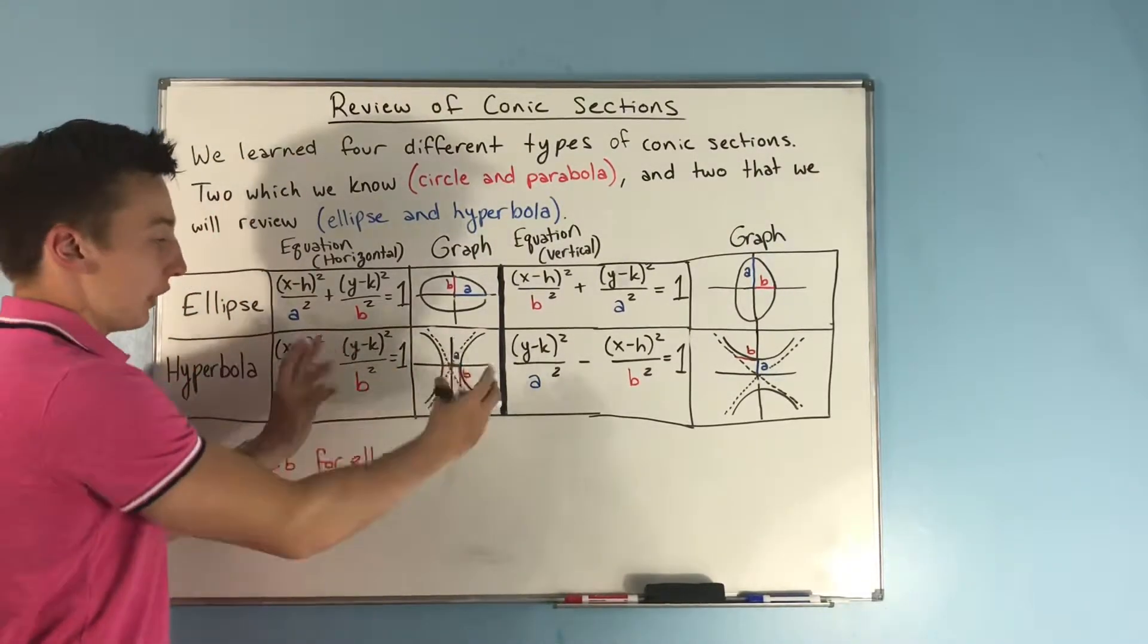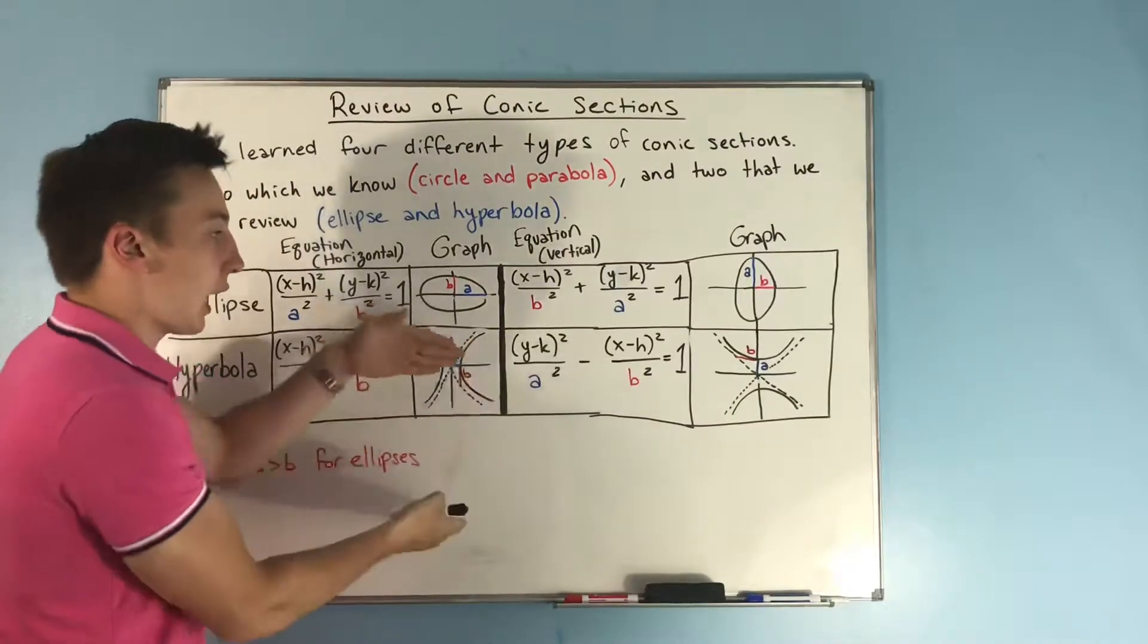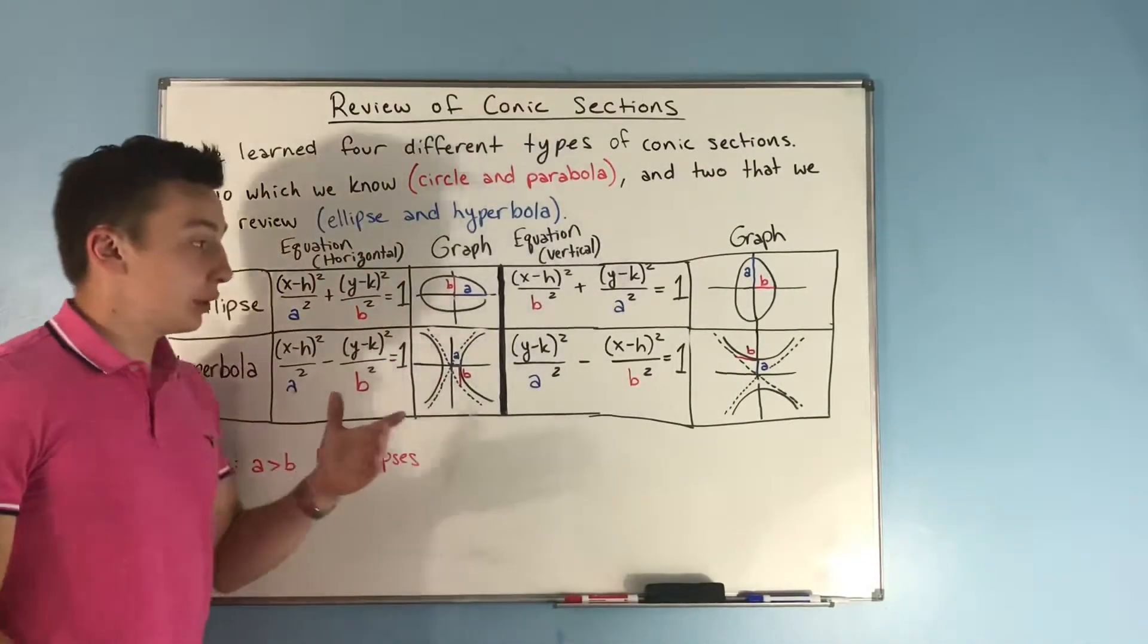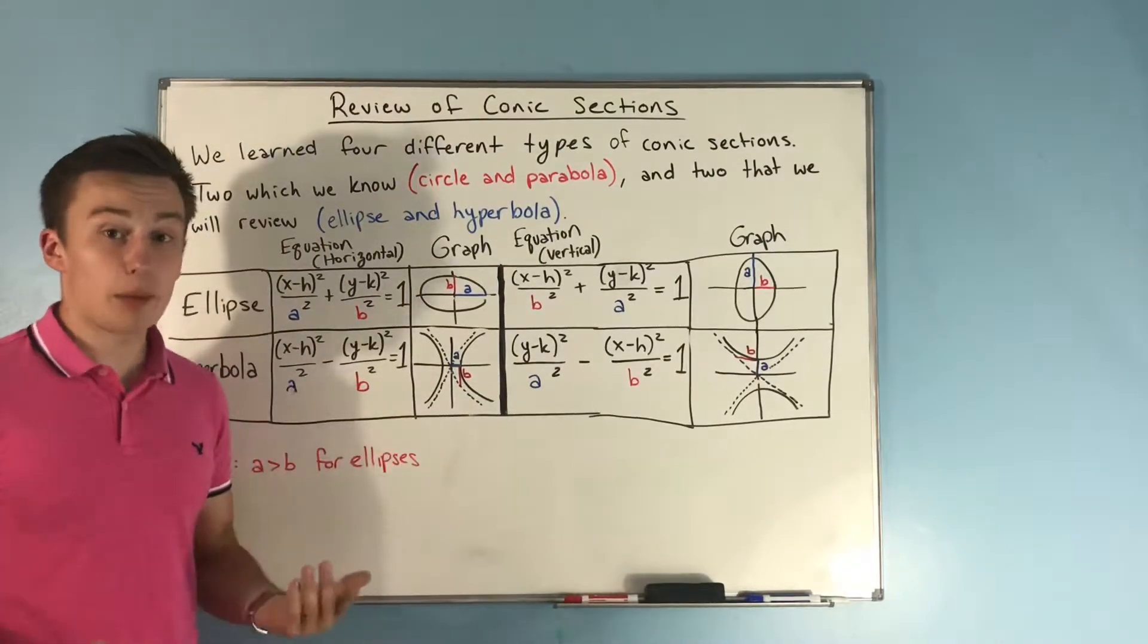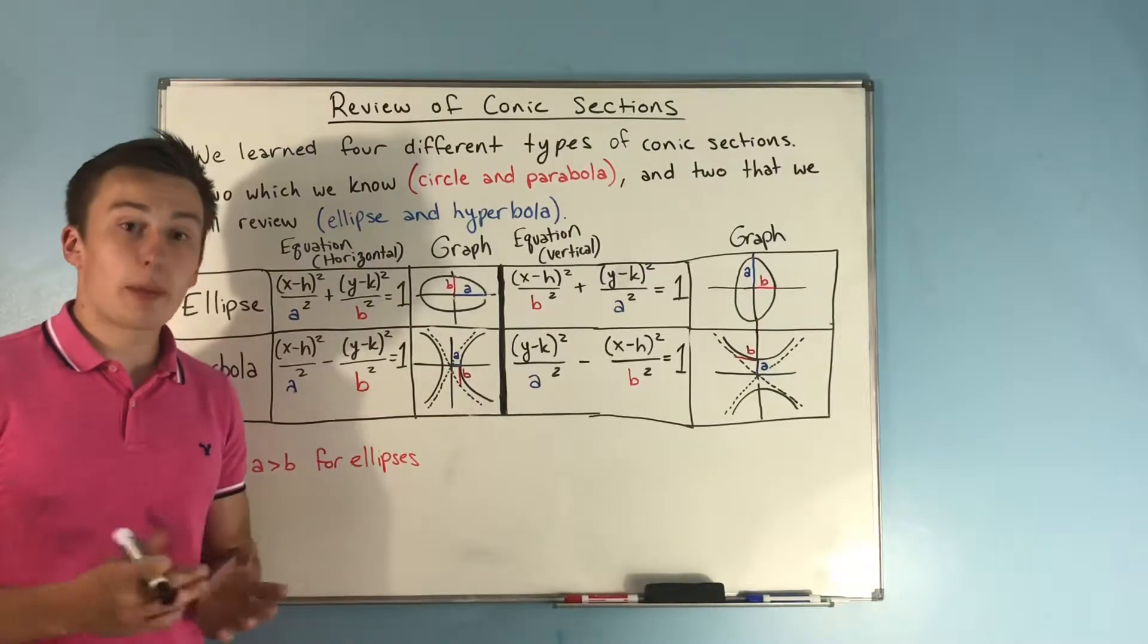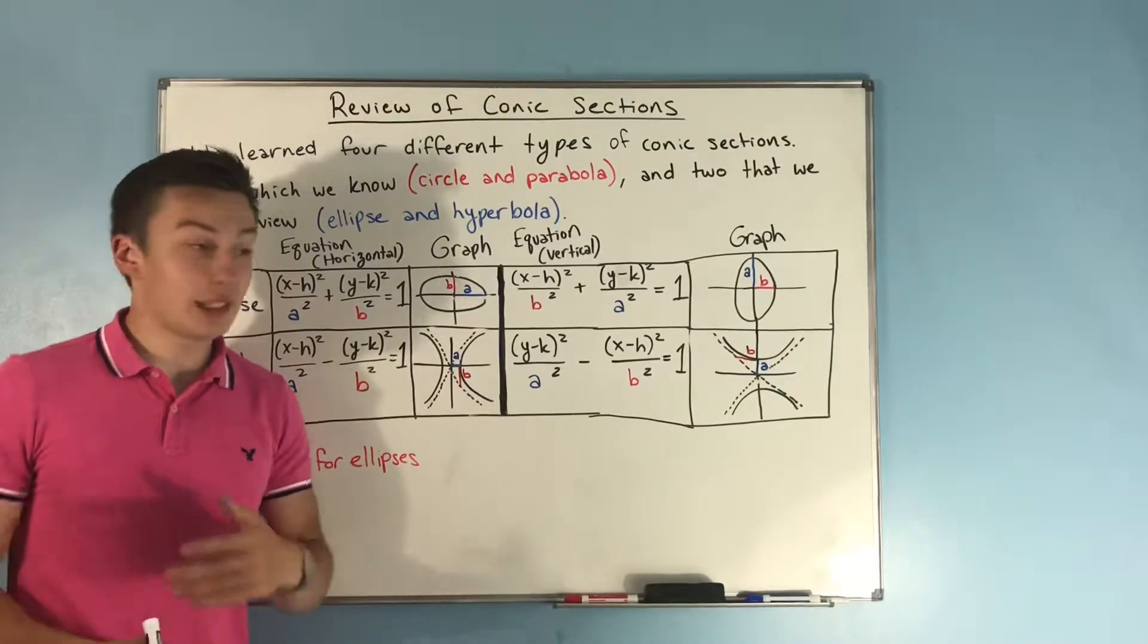And really, I mean, you can see here, this is just this graph turned 90 degrees, and then you get that. So we're just going to do a quick example of both an ellipse and a hyperbola, just to make sure you're kind of caught up here with what we're about to be doing with quadric surfaces, and that'll be it.